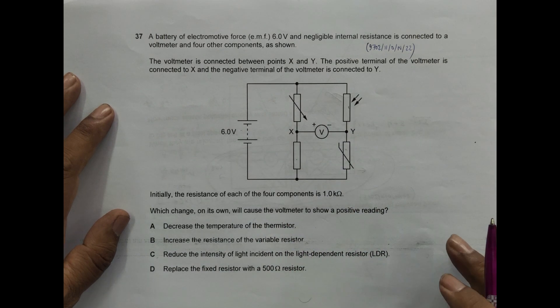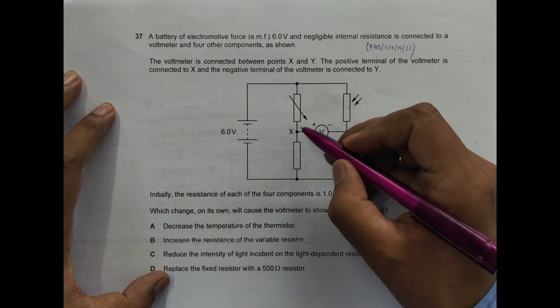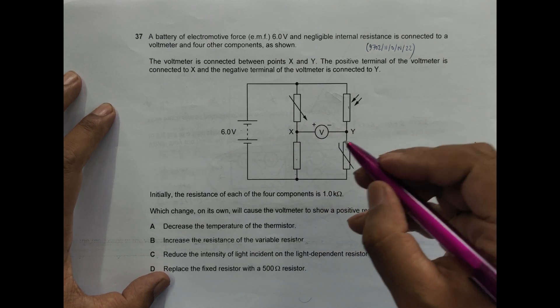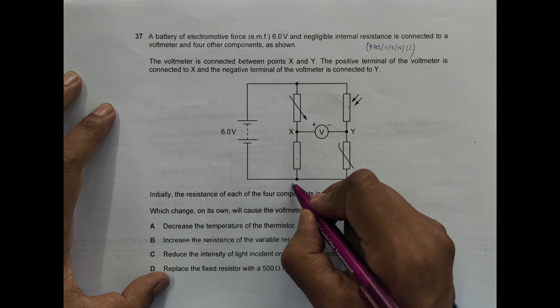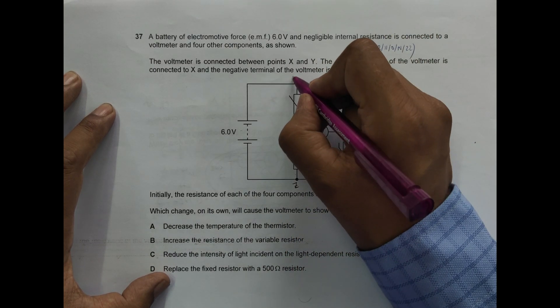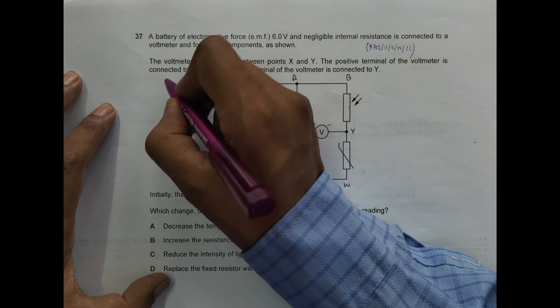So we want the voltmeter to show a positive reading. That means what we must have is—let us give names here. Let us say this is Z and W, let's say this is A and this B.